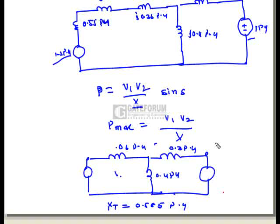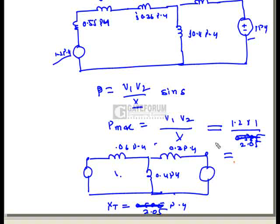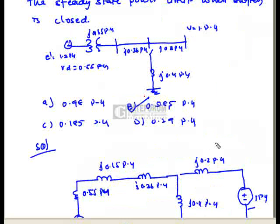With the transfer reactance XT = 2.05 per unit, the maximum power delivered is P_max = V1·V2/XT = 1.2 × 1 / 2.05 ≈ 0.585 per unit. This is the steady state power limit of the network. The answer corresponds to option B. We must find the transfer components — that is the key to solving this problem.